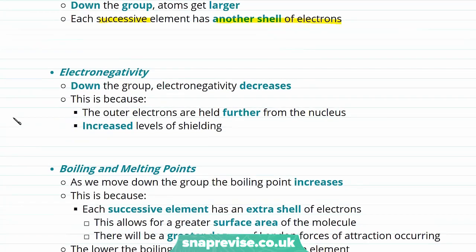We also see a trend in the electronegativity of our halogens — down the group, electronegativity decreases. This is due to two factors: firstly, the outer electrons are held further from the nucleus because there are increased levels of shielding. As we move down the group, we increase the number of shells of electrons, which increases shielding, meaning the outer electrons experience a lesser force of attraction towards the nucleus.